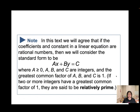If the coefficients and constants in a linear equation are rational numbers, we consider the standard form. The standard form is ax + by = c, where a is greater than or equal to zero, a, b, and c are integers, and the greatest common factor of a, b, and c is one. When two or more integers have a greatest common factor of one, they are said to be relatively prime.